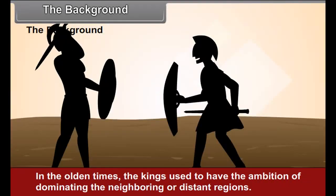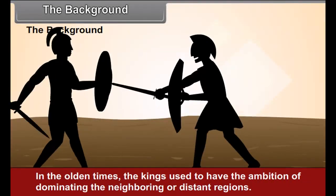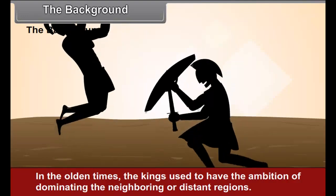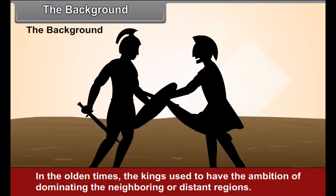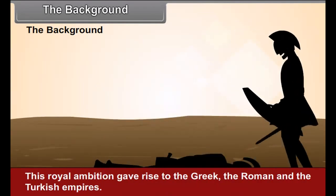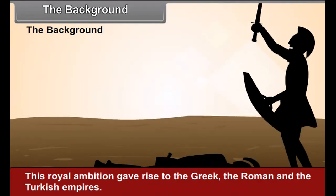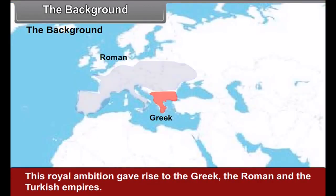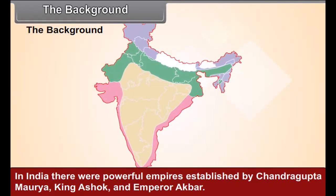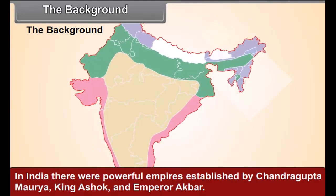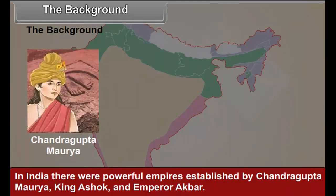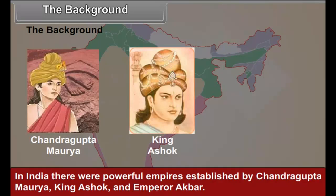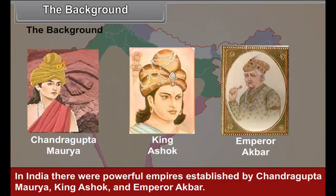In the olden times, the kings used to have the ambition of dominating the neighboring or distant regions. This royal ambition gave rise to the Greek, the Roman, and the Turkish empires. In India, there were powerful empires established by Chandragupta Maurya, King Ashoka, and Emperor Akbar.